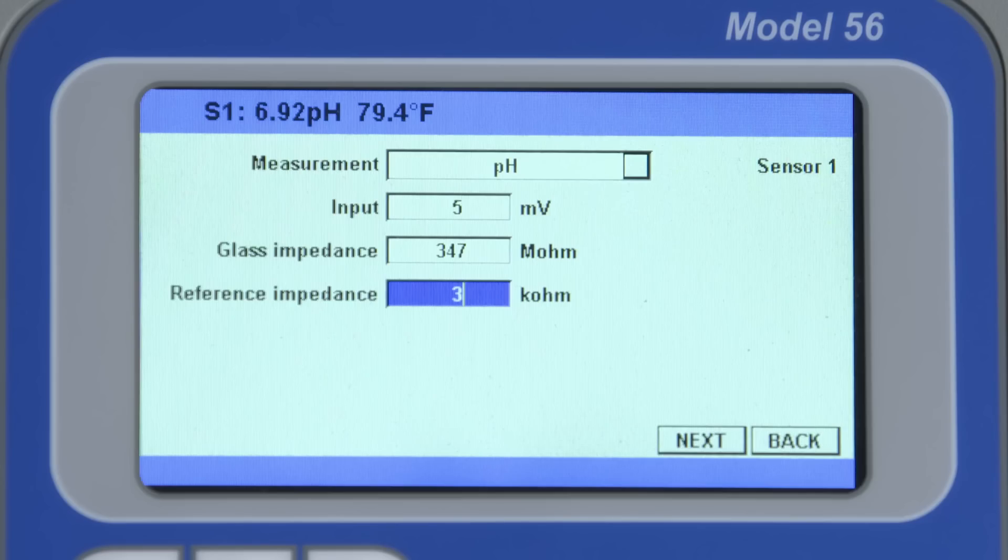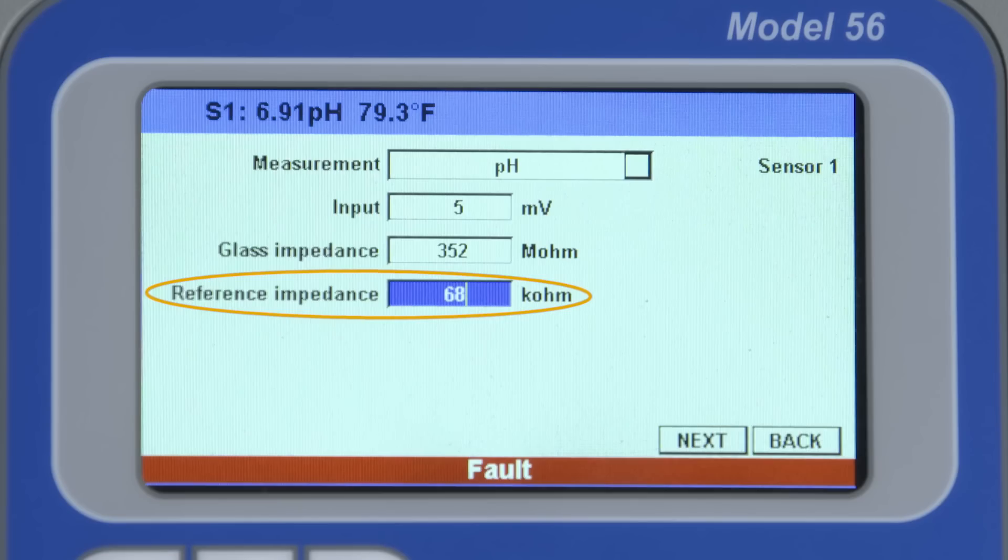A new pH sensor generally has a reference impedance of under 10 kiloohms. Over time, this can trend upwards which could indicate coating or clogging of the reference junction or depletion of the reference electrolyte.